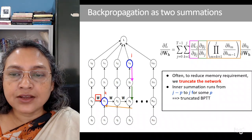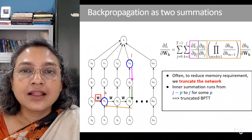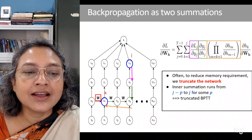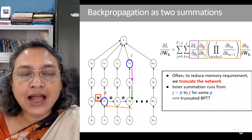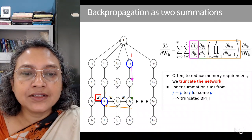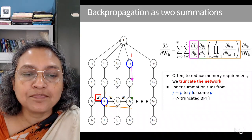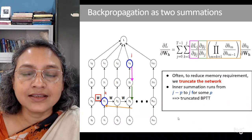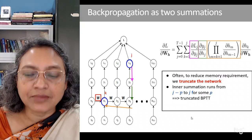If the sequence is very large it may not be practical to do back propagation over the entire sequence. Therefore, to reduce the memory requirement, we often will be required to truncate the network — that is, instead of unfolding the network up to time step 0, we only unfold it up to a particular sequence length. For example, this truncation may run from j minus p up to j for some p, where p is the length of the sequence considered. This is called truncated back propagation through time, and is what is usually done in practical situations.